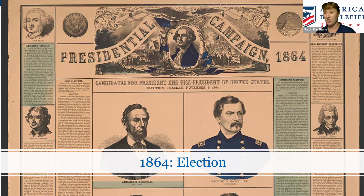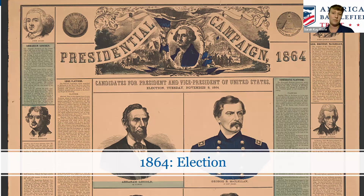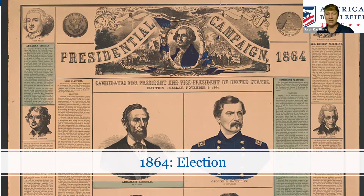Some Democrats were willing to make peace at any cost — even letting the Southern states go as a separate nation. Others wanted a peace treaty to bring the country back together but keep slavery. There was a big plank in their platform that was peace. McClellan wasn't in favor of it, but he remained as the candidate. In this era, candidates themselves don't campaign; instead, other members of their political party make speeches on their behalf and raise support.